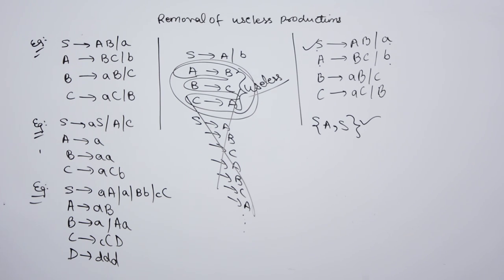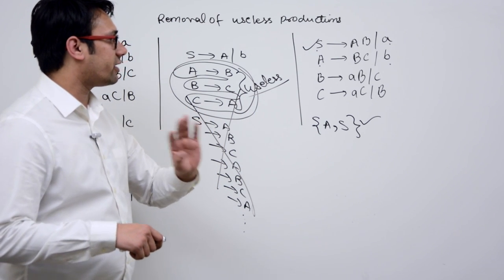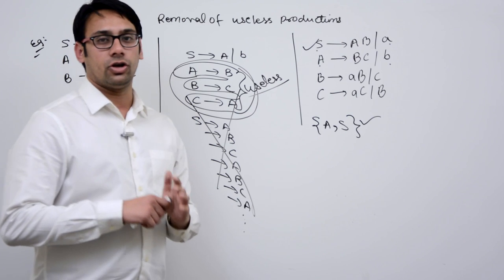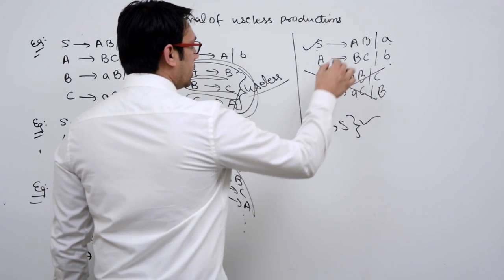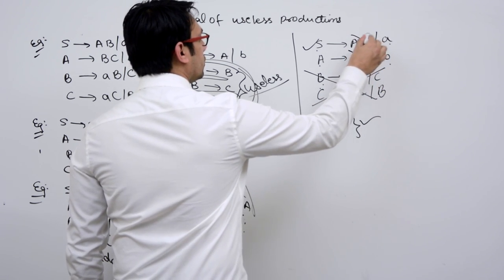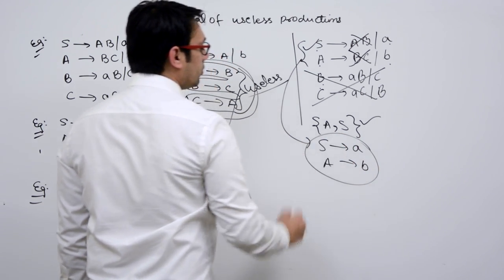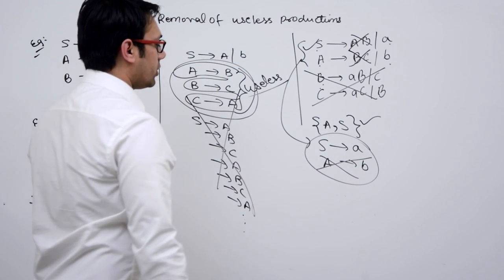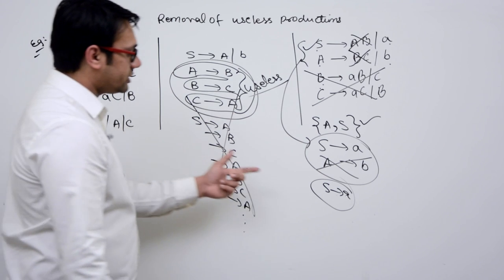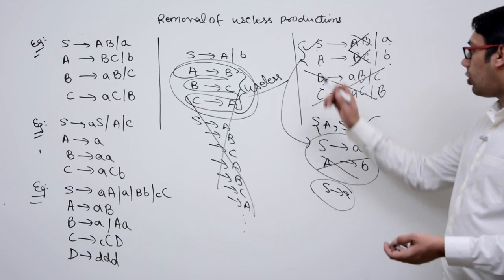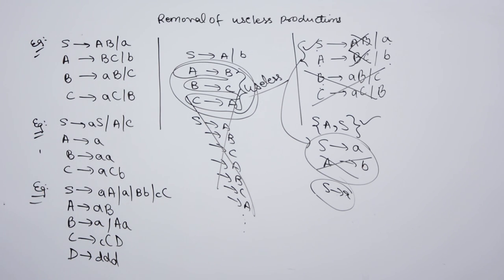These are the symbols proven to be useful. Only with the help of these symbols will we be able to generate any string; other symbols are not useful. So B and C are not useful and we remove them. If there is any reference to B or C, we remove it. After removal, we only get S derives small 'a' and A derives small 'b'. Now removing unreachable symbols: A derives small 'b' is unreachable, so we get S derives small 'a'. This complete grammar was only generating small 'a' from the start symbol.